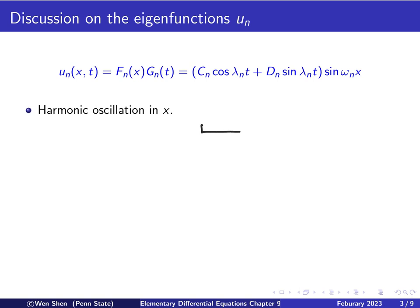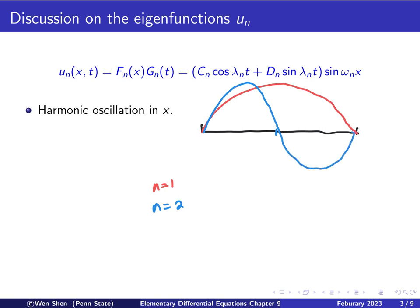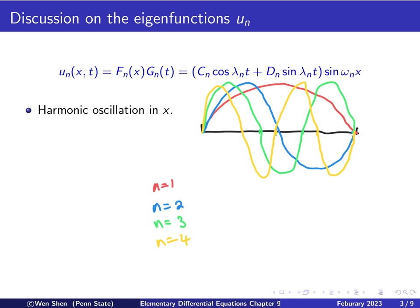We can visualize this on the interval from 0 to l. When n equals 1, it's just half a period of a sine function. When n equals 2, the frequency increases and you have a whole period. When n equals 3, the function oscillates three times — up, down, and back up. When n equals 4, it completes four oscillations. These are harmonic oscillations with amplitude equal to 1.